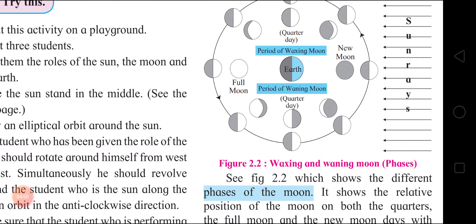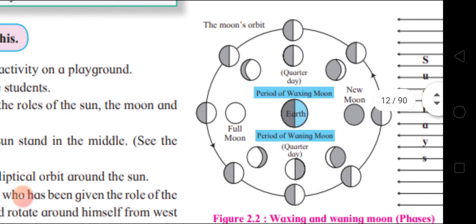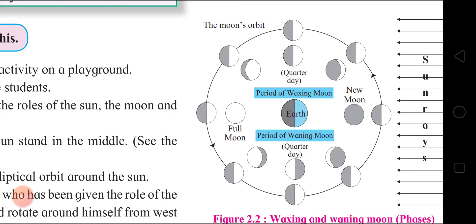The changing shapes of the illuminated part of the moon as seen from the Earth are called faces of the moon. How we stand and we see the moon, it is having all different shapes.